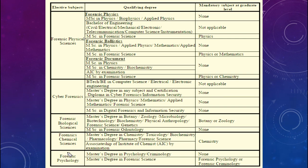For forensic psychology, you must have a master's degree in psychology or criminology, or a master's degree in forensic science. If you have a master's degree in forensic science, your graduate-level subject must be forensic psychology or forensic criminology. This covers all the educational qualification requirements.